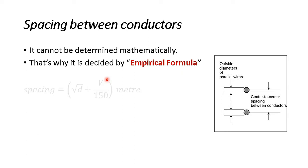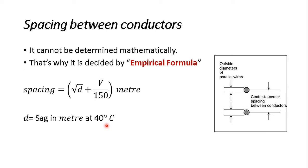A German empirical formula is used for the spacing of aluminum conductors, given by: Spacing = √d + V/150 meters, where d is the sag in meters at 40 degrees centigrade and V is the voltage in kilovolts. Using this formula we can derive the spacing between two conductors. For example, for an 11 kV transmission line, substituting the sag value into the formula gives the required spacing.